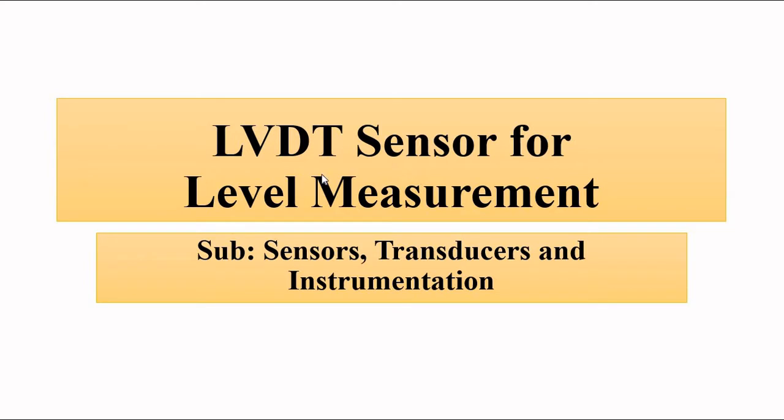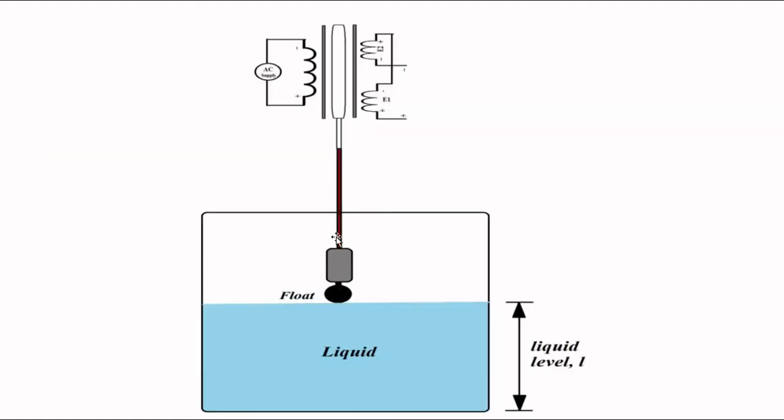The basic setup of level measurement involves the same principle. Here we are using a float which is placed on the liquid contained in a tank or container, and that float is connected to the core, the movable core of LVDT.